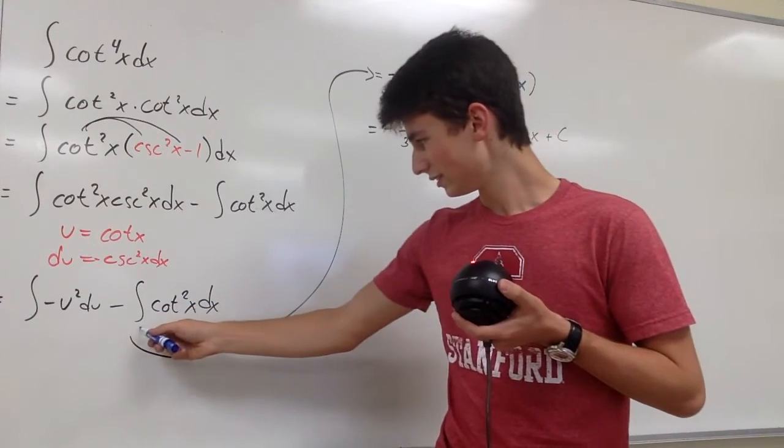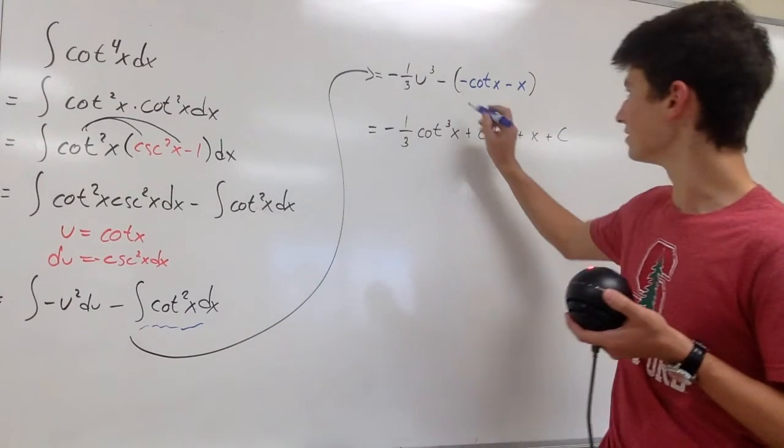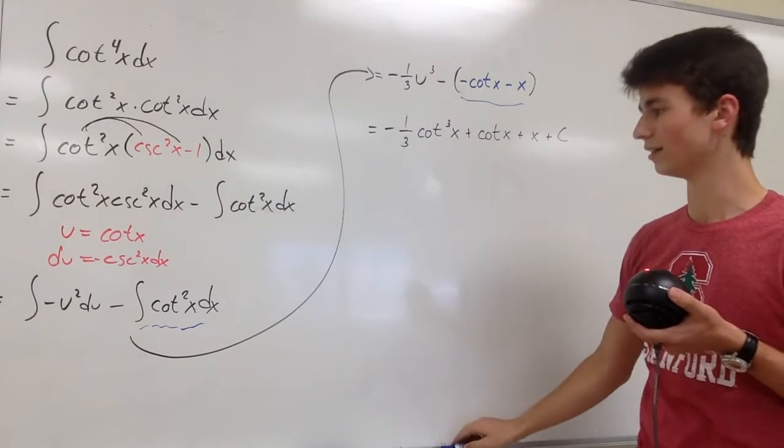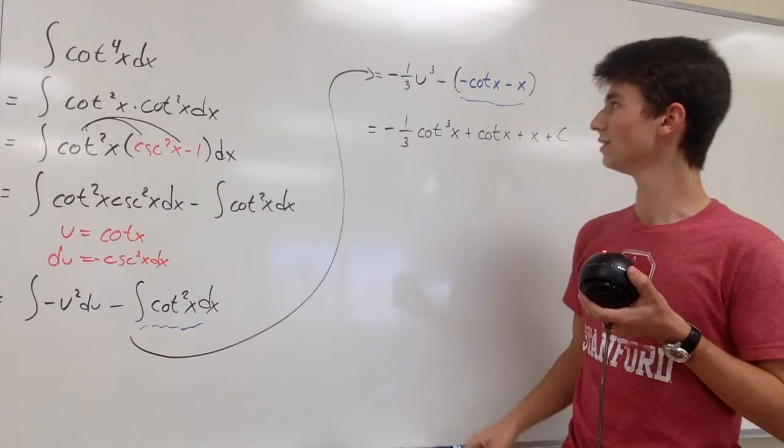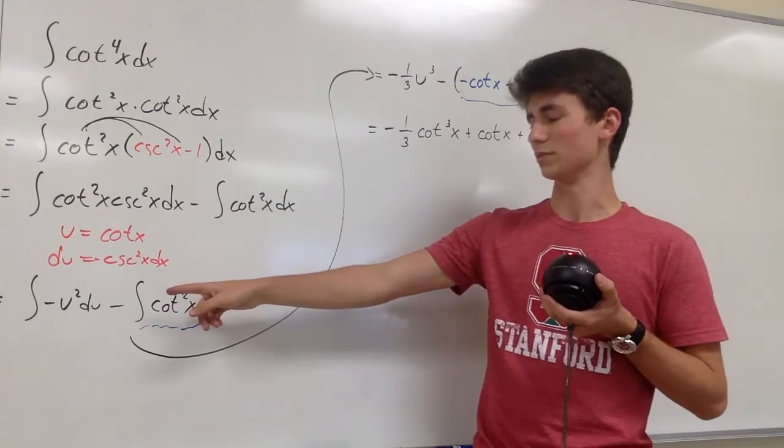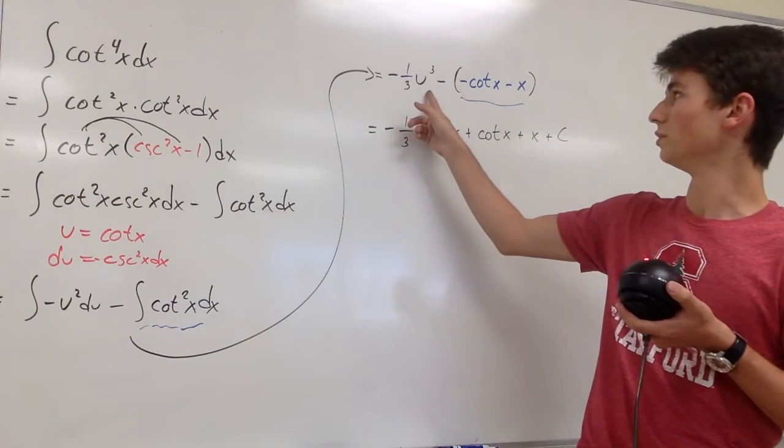And this bit will correspond to this bit. This is the integral of cotangent squared of x dx. And when you integrate u squared, you get one-third u cubed, keep the negative.